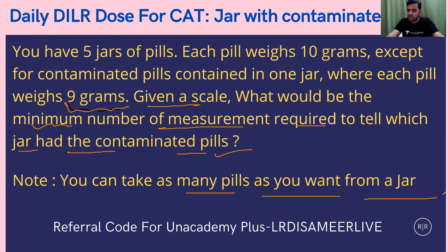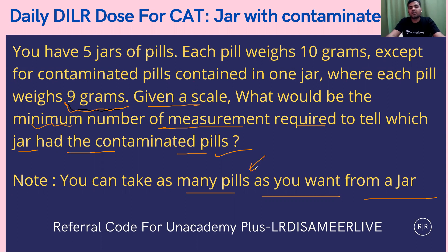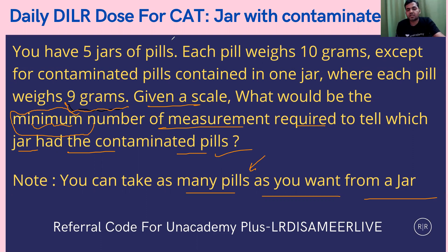You have been given a scale, you can take as many measurements as you want, and you're supposed to tell which particular jar has the contaminated pills. The number of pills you want to take from a jar depends on you — you can take as many pills as you want. So we are supposed to find out the minimum number of measurements required. That's the question.